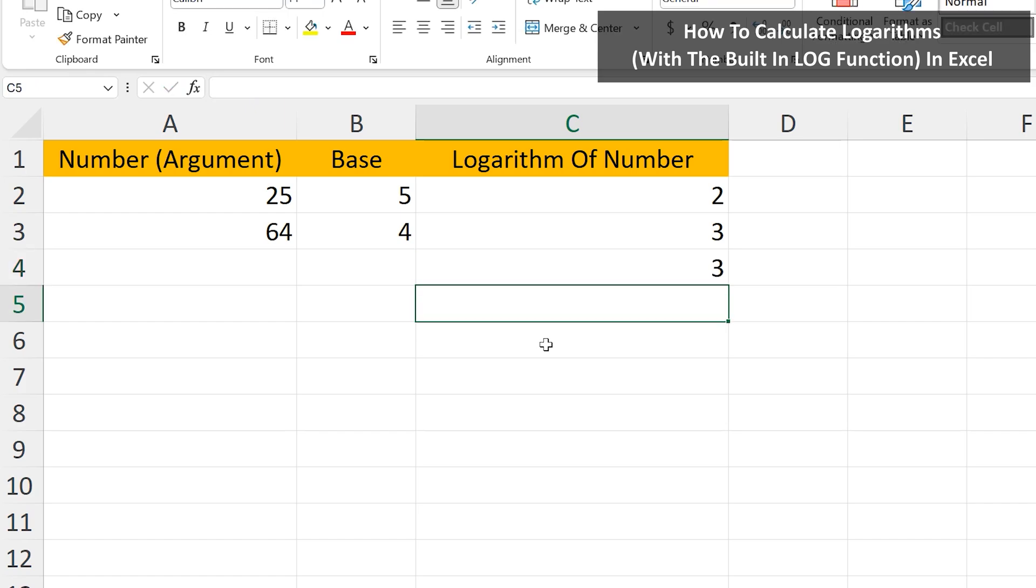And one other note. If you do not enter a base number, as you see here in cell C5, just log 100, Excel will automatically assign a base number of 10. I hit the Enter key, and we get 2, as 10 raised to the 2 equals 100.